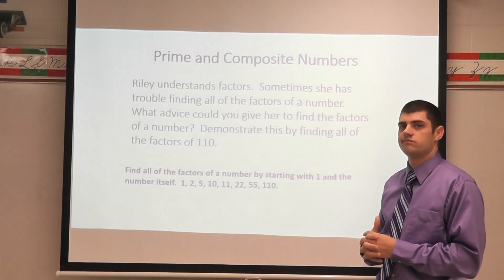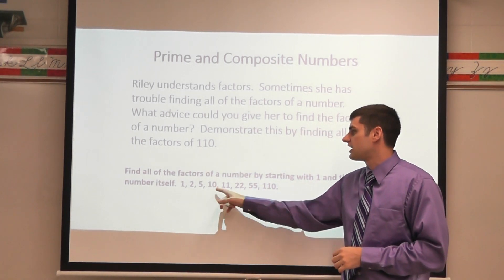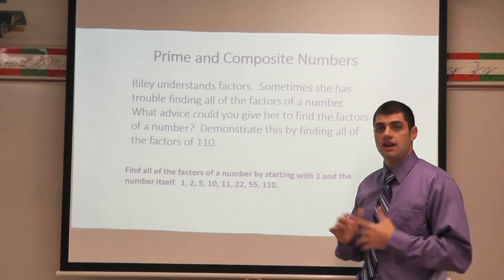Seven won't work. Eight won't work. Nine won't work. Oh I know 10 will go into it. 10 times 11 would give me 110 and I know that 10 and 11 are a factor pair. And now I know that I'm done.